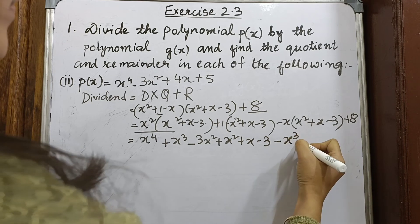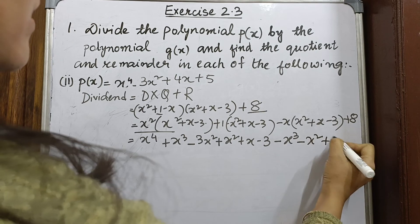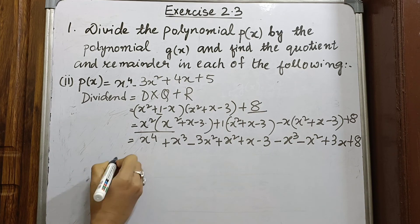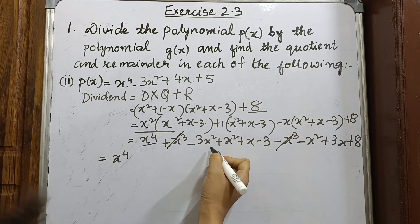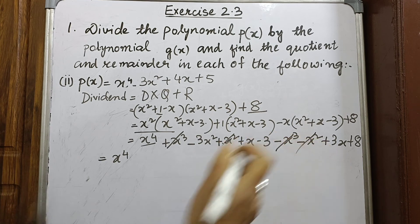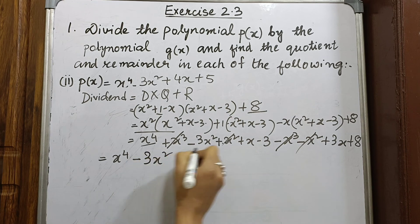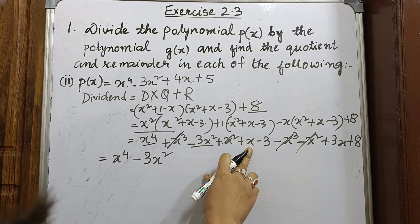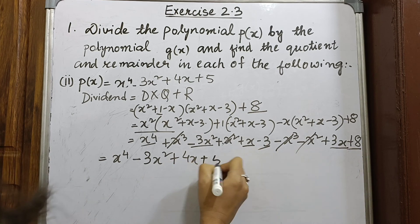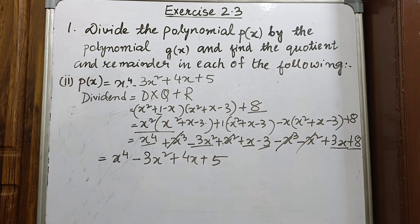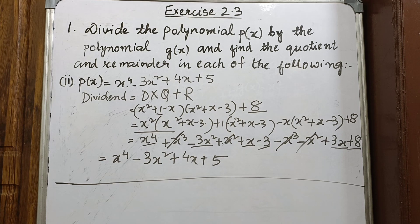Expanding and collecting: x⁴ term is just one, the x³ terms cancel, x² terms: plus x² and minus x² cancel leaving minus 3x², then x terms: x plus 3x gives 4x, and the constant: 8 minus 3 is 5. This gives x⁴ minus 3x² plus 4x plus 5, which matches the original dividend. This confirms the answer is correct. The remaining problems you can do yourself in the same way. Thank you and goodbye.